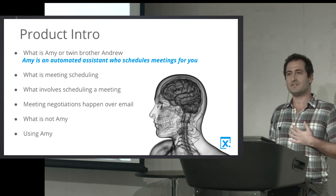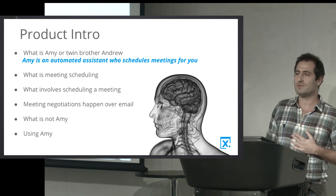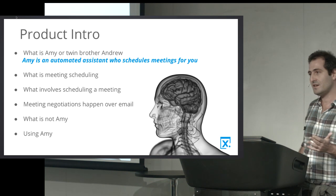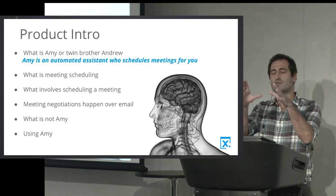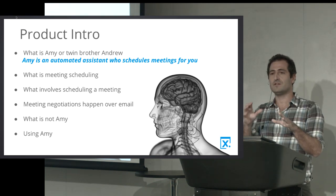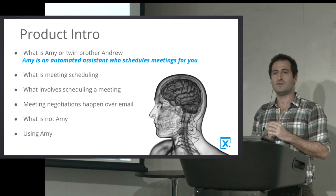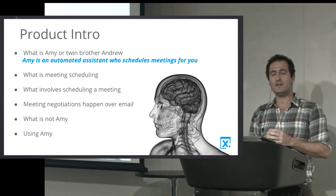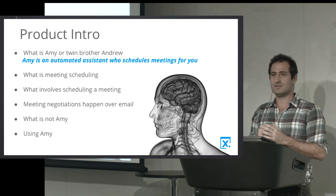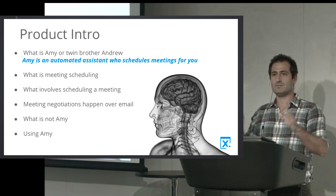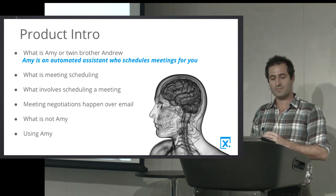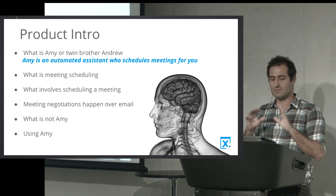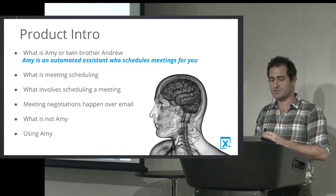Then those people get back to the system and say 'that time doesn't work' or 'that time works but that location doesn't.' The system needs to understand their responses and start this negotiation, eventually converging on a time and place for the meeting. Then it just sends out a meeting invite to everybody. That's what's involved in scheduling meetings in a very simplistic description.